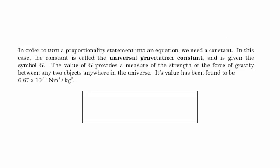If we want to turn a proportionality statement into an equation, as we mentioned earlier with F equals ma, we need a constant. In the case of F equals ma, the constant happened to be just one. But here, the constant is not one. It's the universal gravitation constant.